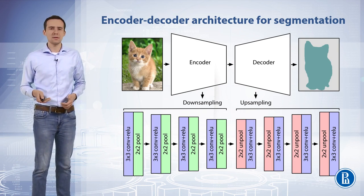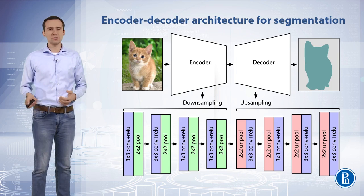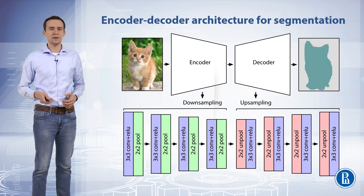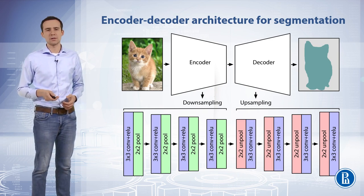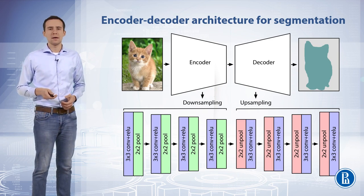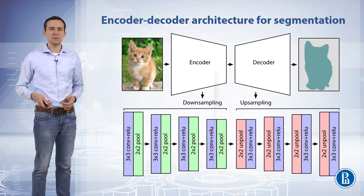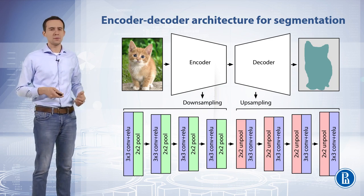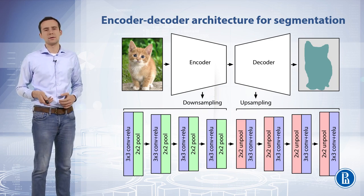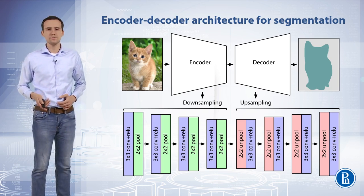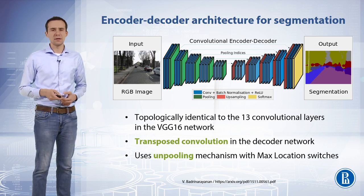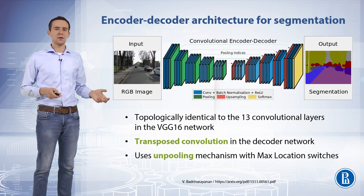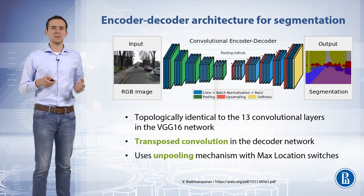To preserve information, we could use skip connections, or reverse all convolution and pooling layers by applying unpooling and transposed convolution operations in the decoder part — at the same positions where max pooling and convolution are applied in the encoder part of the network. A working example of such an architecture is the SegNet model, featuring a VGG-identical encoder or downsampling part and a corresponding decoder or upsampling part.